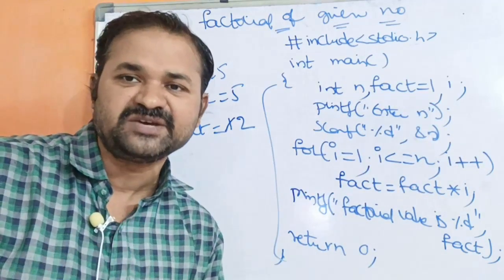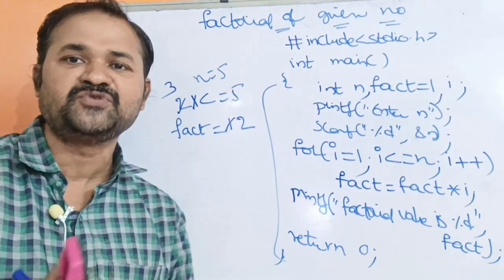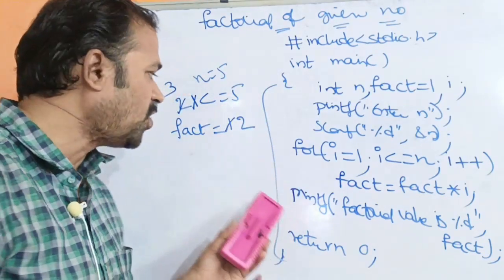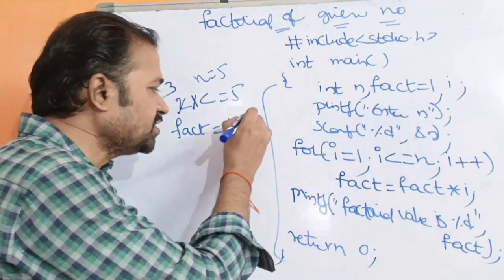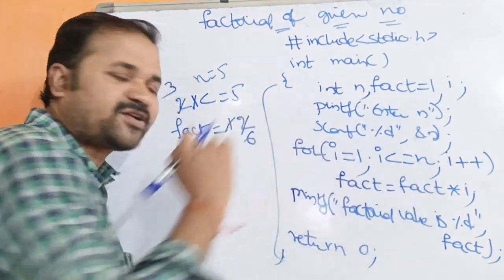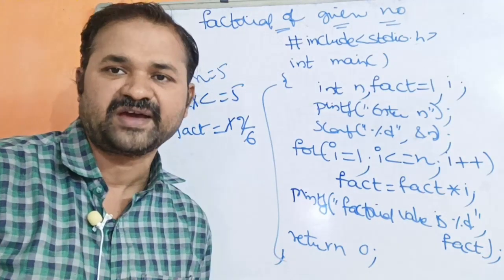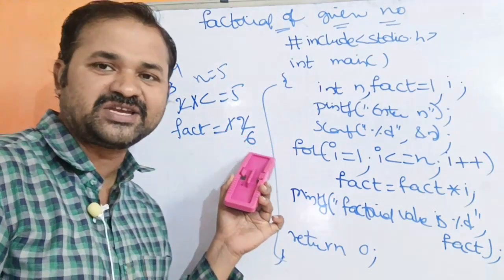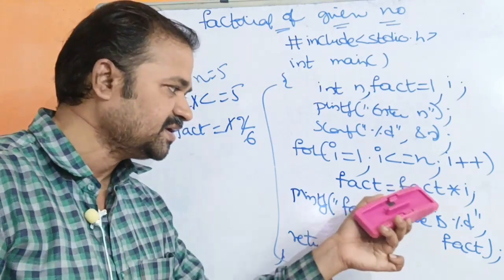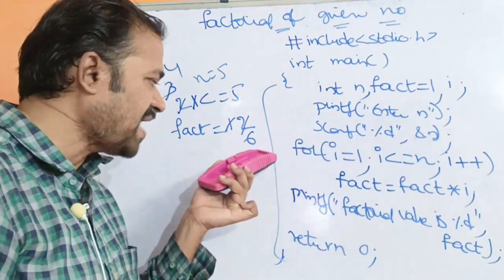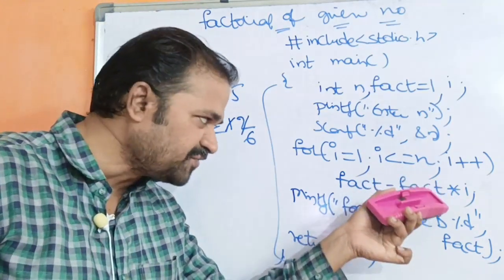i plus plus, i lo 3 avuthundi. 3 is less than or equal to 5 - condition is true, body execute avuthundi. fact is equal to fact into i - fact lo 2 hundi, i lo 3 hundi - 2 into 3 anta 6. Fact lo 6 avuthundi. i plus plus, i lo 4 avuthundi. 4 is less than or equal to 5 - condition true. fact into i - fact lo 6, i lo 4 - 6 into 4 anta 24. Fact lo 24 avuthundi.